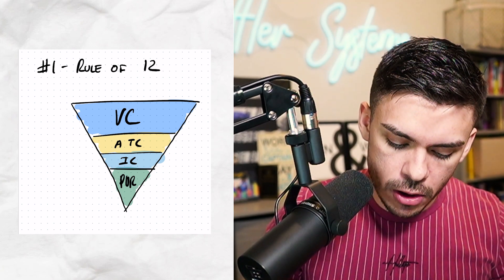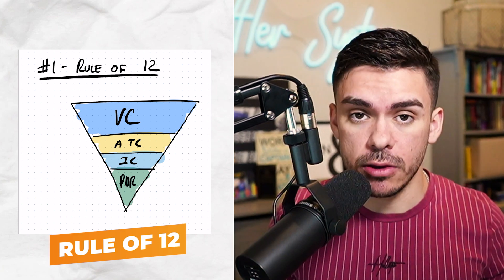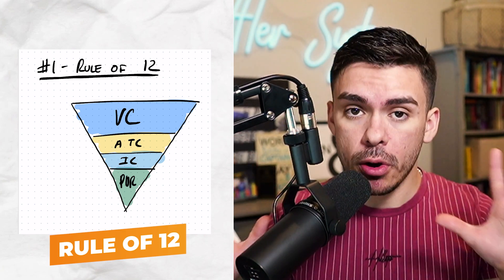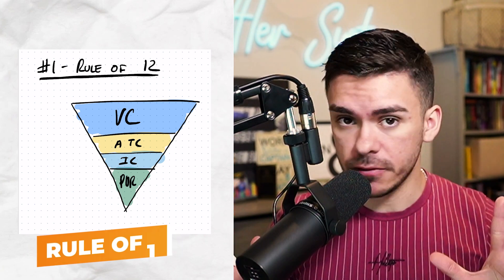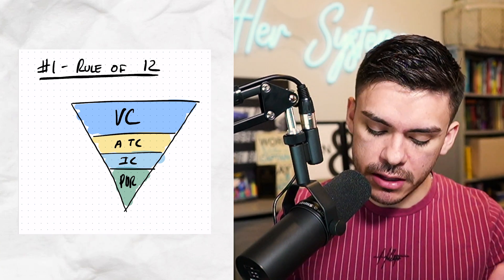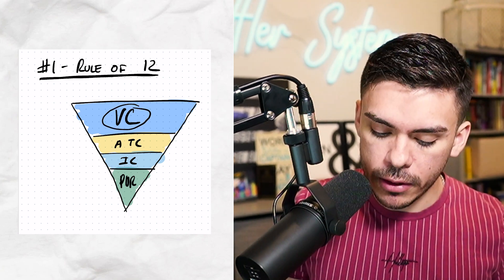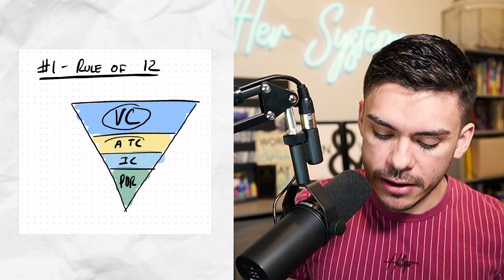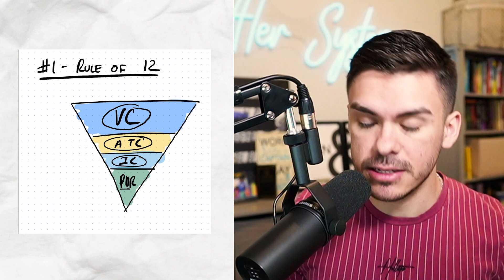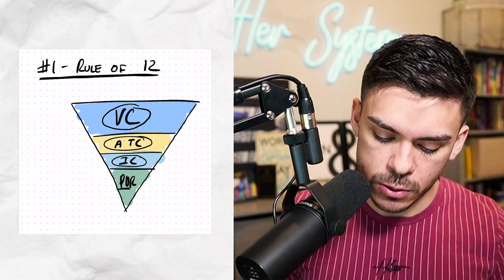Number one is going to be what I call the Rule of 12. Whenever we are looking at a funnel, at the very top we're going to have view content. Following that, we're going to have add to cart. Following that, we are going to have initiate checkout. And then lastly, we're going to have the good stuff — purchases.